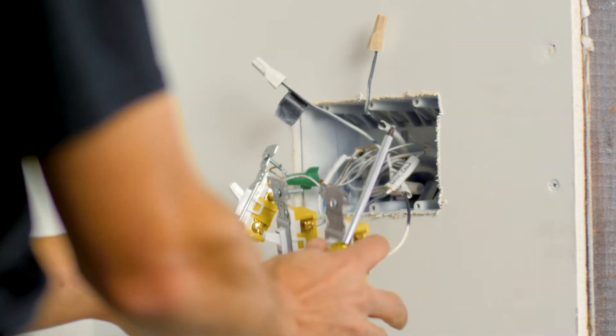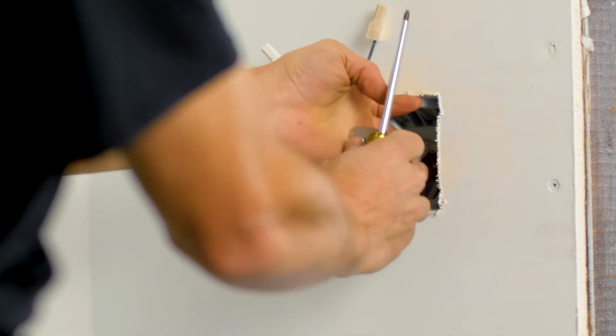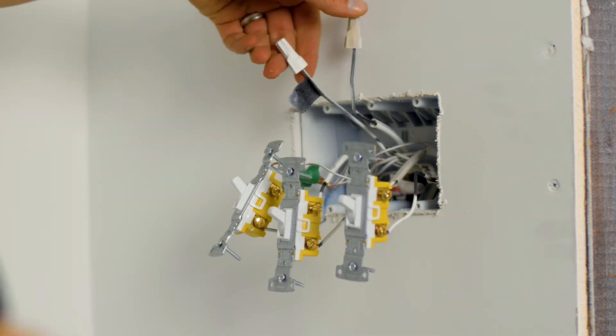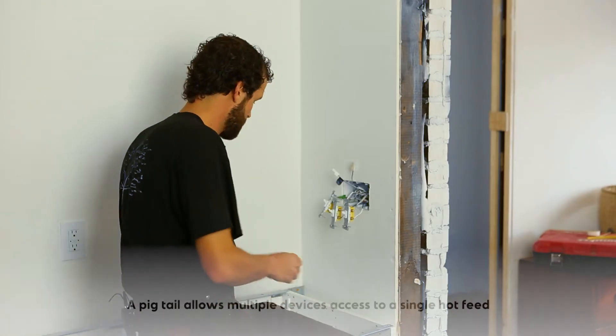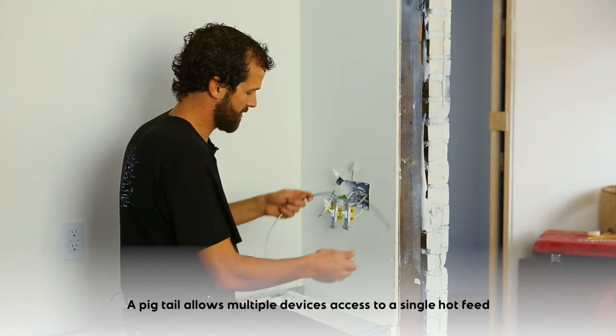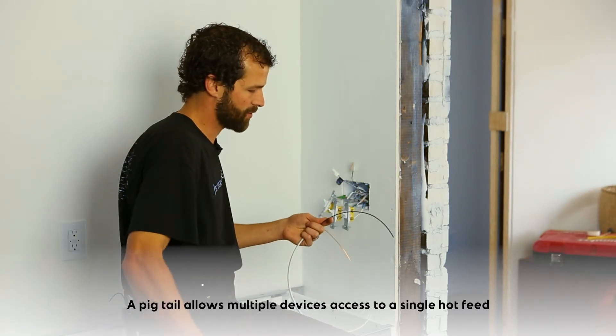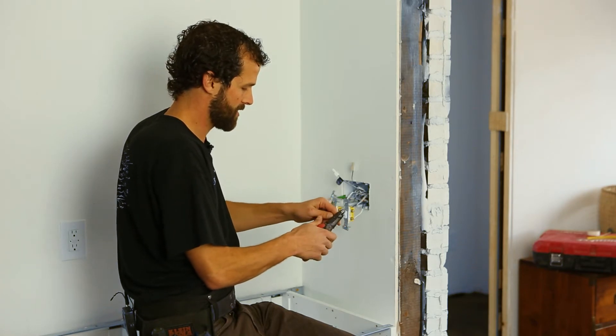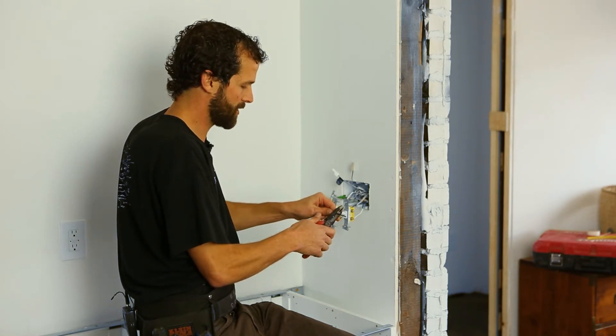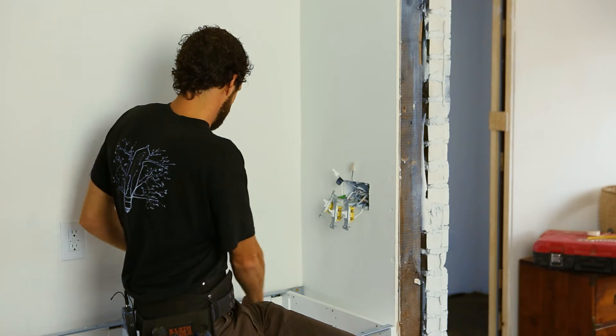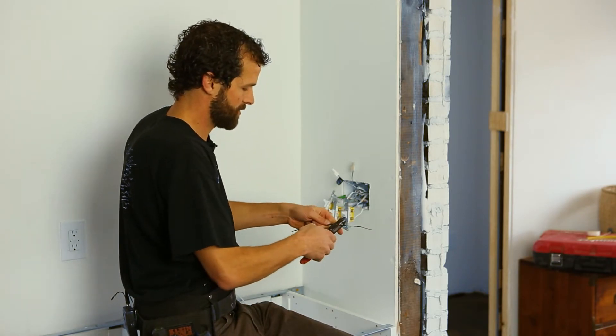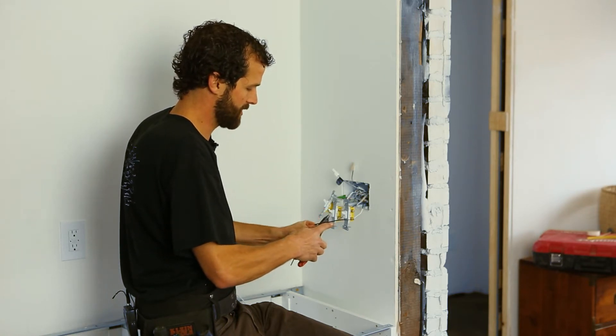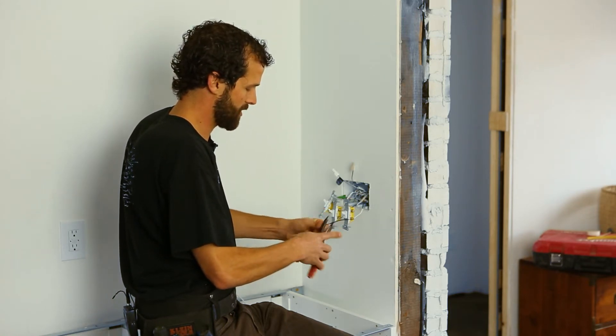So now what I have is all three switch legs have been terminated, and I've got two conductors left, two black conductors in this case that are both hot. What I need is a pigtail. I've got my 14-2 Romex here, and I'm going to cut off about 12 to 14 inches to create that pigtail. I'm going to pre-strip about two inches off the end of the wire. I'm going to come down to about a third of the way.